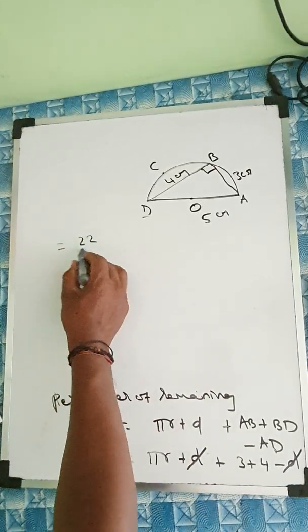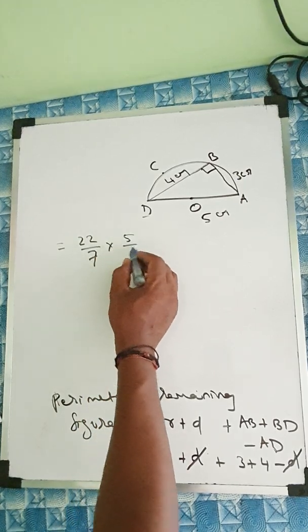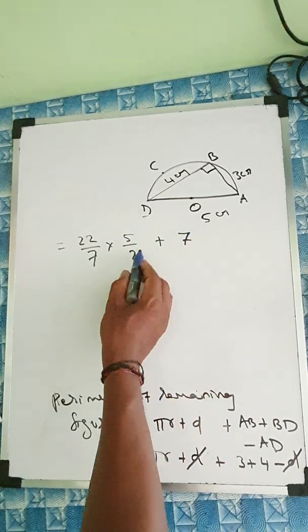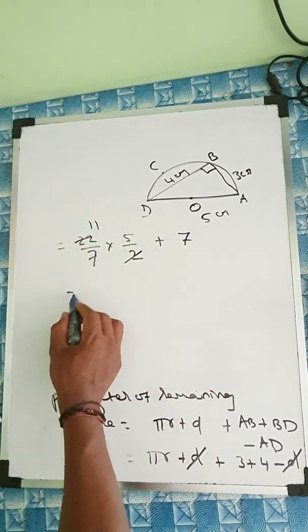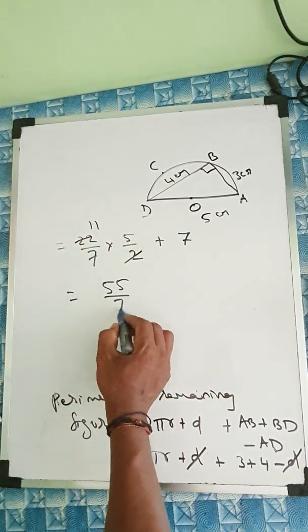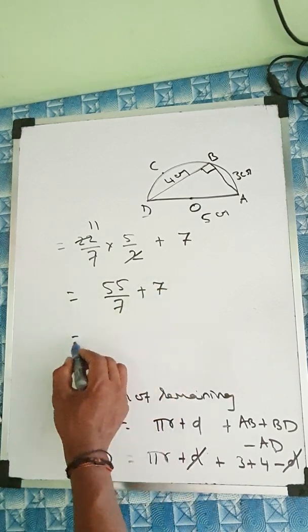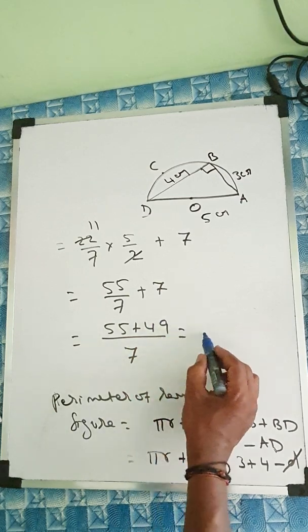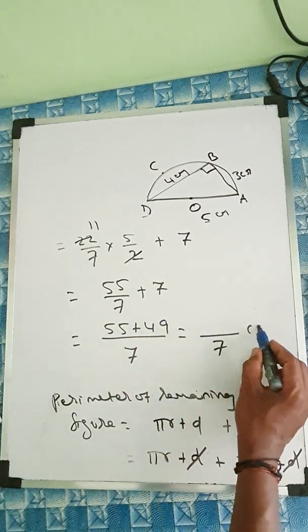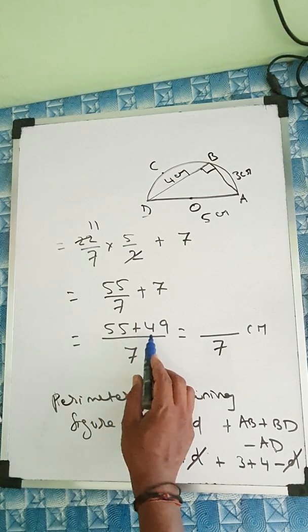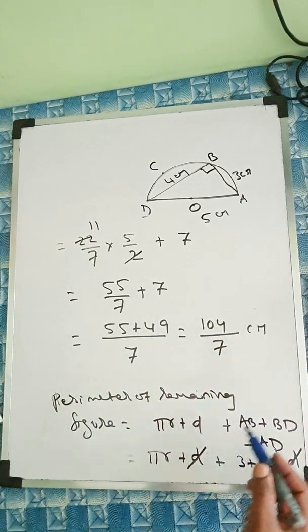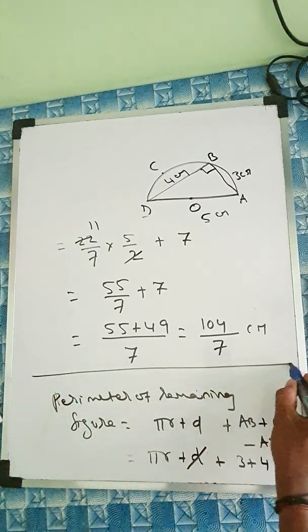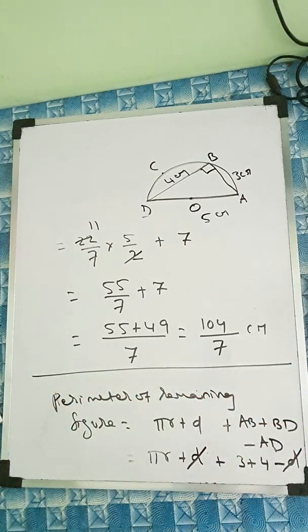π is 22 by 7 into radius is 5 by 2 and plus 3 plus 4, 7 is here. You can cancel to 11 star. 11 5s are 55 by 7 plus 7. If we take care of 7 is 7. 55 plus 7, 7 star 49. We will just add these two. 104 by 7 centimeter. We can cancel only this one, we will just keep it like that. This exercise 18A over.